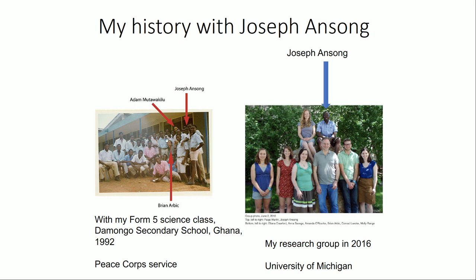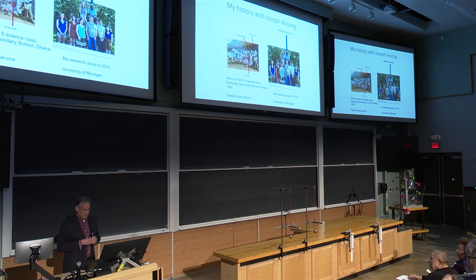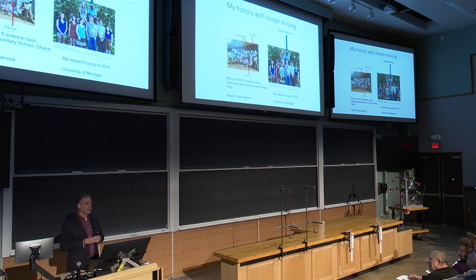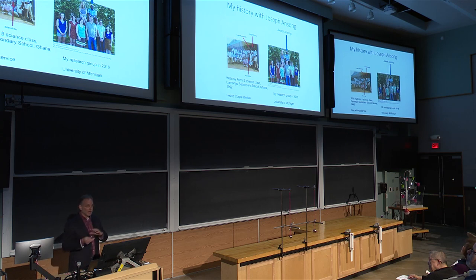This is me in 1992, and these are the Form 5 science students that I taught. There were many good students there, but two in particular stood out: Joseph Ansong, who's here, and Adam Utokilu, who's here. Sixteen years went by and I had lost touch with all of them. But then they started writing me. I started wondering about Joseph Ansong because he was the best student. It turned out, totally unbeknownst to me, he was getting a PhD in applied math studying internal waves at the University of Alberta. He was studying a related topic, so I hired him into my lab as a postdoc. He was there for six years, and now he's back in Ghana as a faculty member.